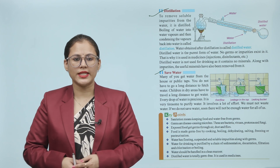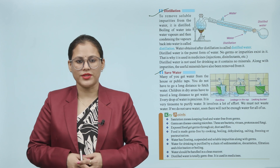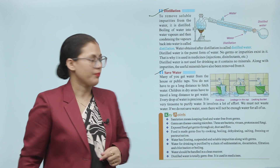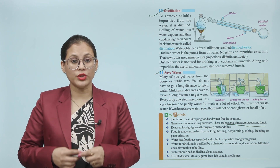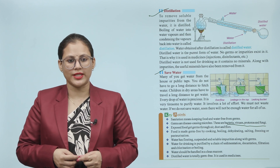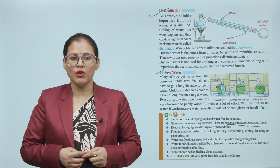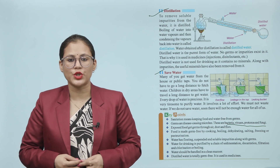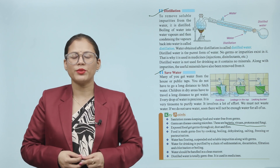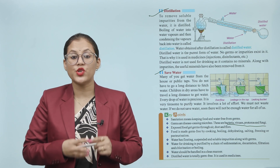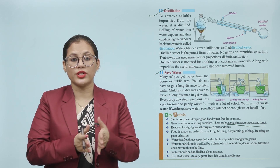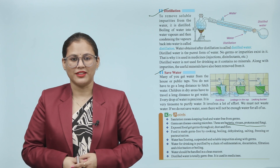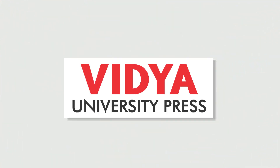Key points. Sanitation means keeping food and water free from germs. Germs are disease-causing microbes — these are bacteria, viruses, protozoa and fungi. Exposed food gets germs through air, dust and flies. Food is made germ-free by cooking, boiling, dehydrating, salting, freezing or pasteurization. Water has floating, suspended and soluble impurities along with germs. Water for drinking is purified by a chain of sedimentation, decantation, filtration and chlorination or boiling. Water should be handled in a clean manner. Distilled water is totally germ-free and is used in medicines. I hope you understood this chapter and know how precious water is.